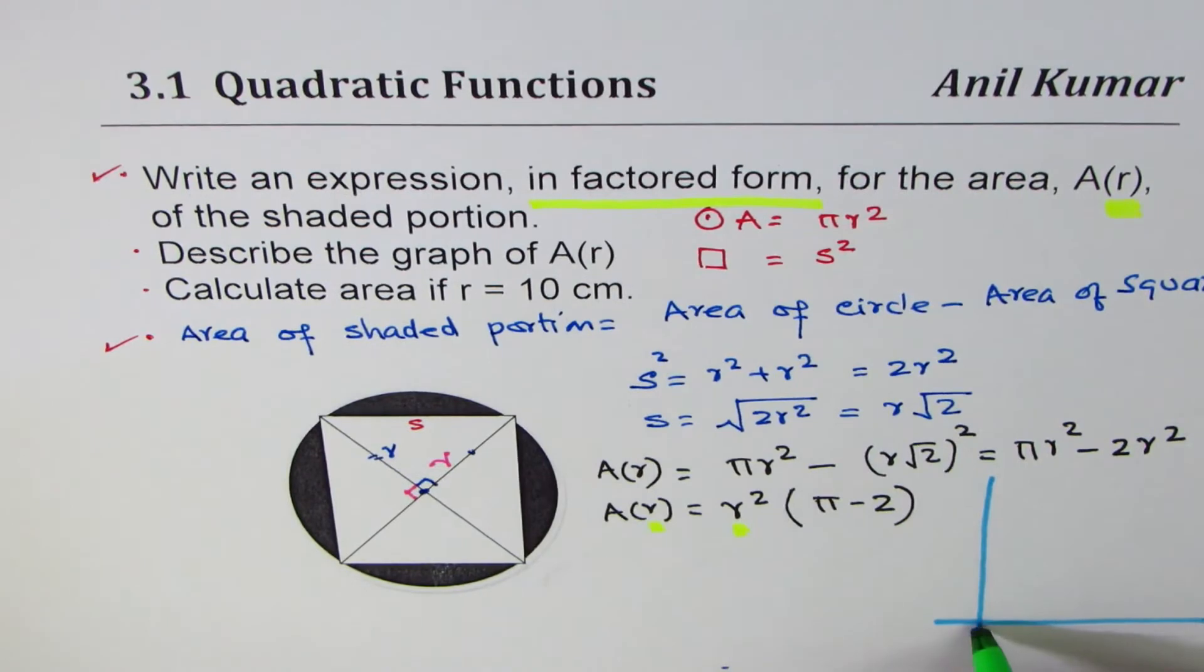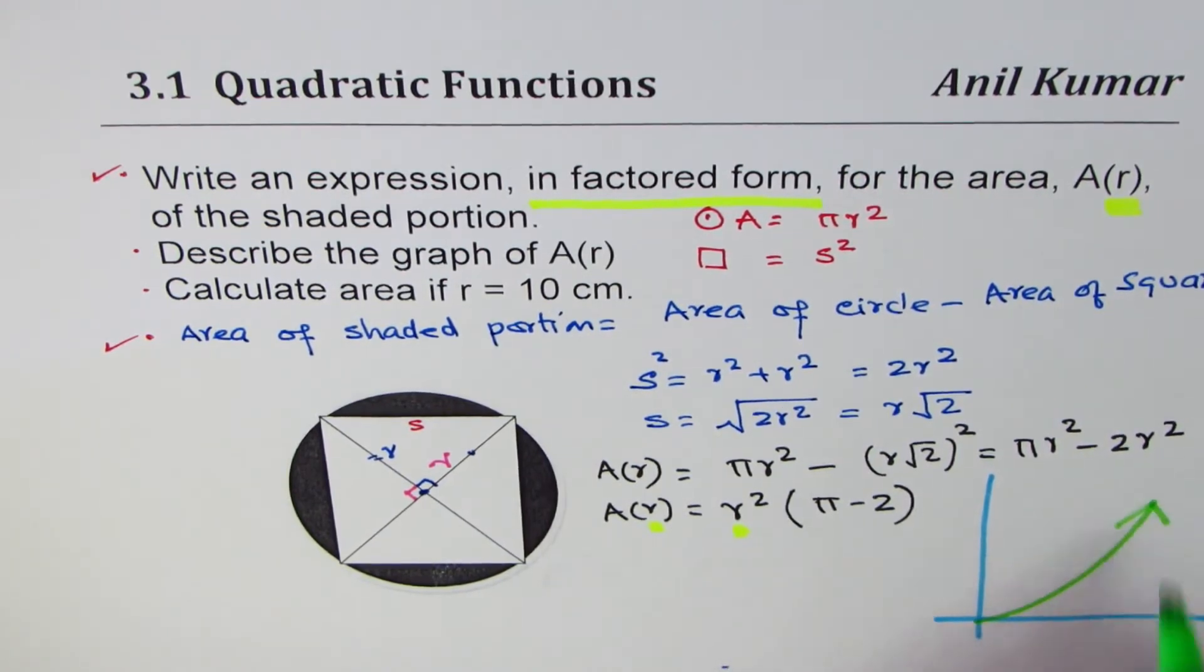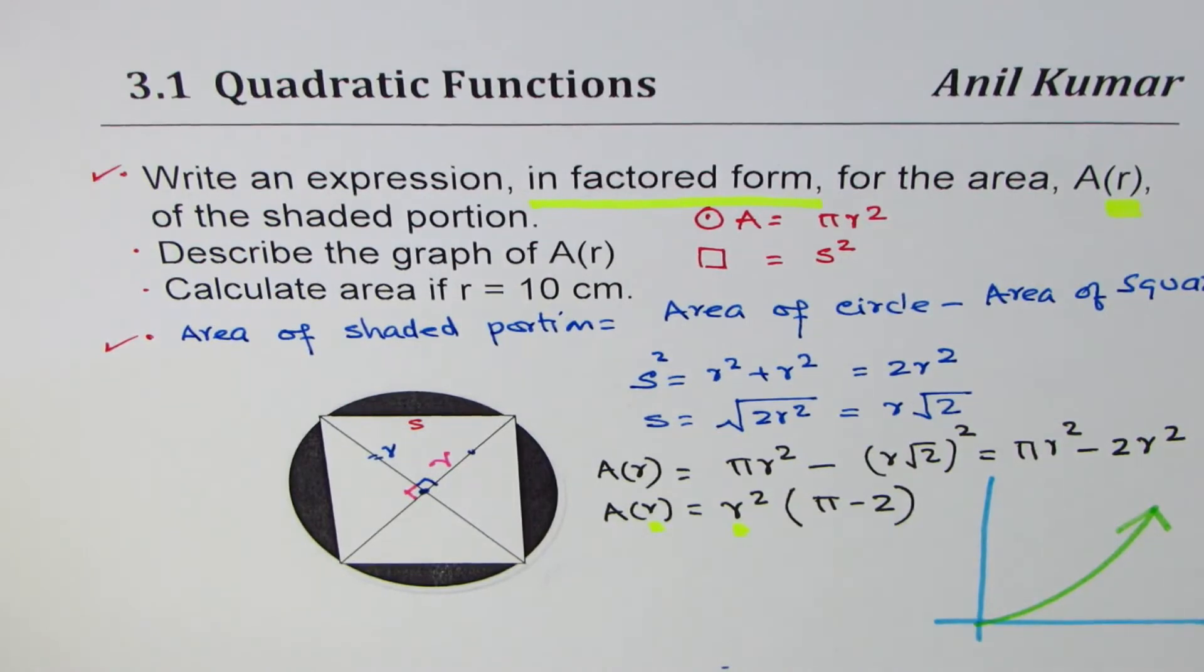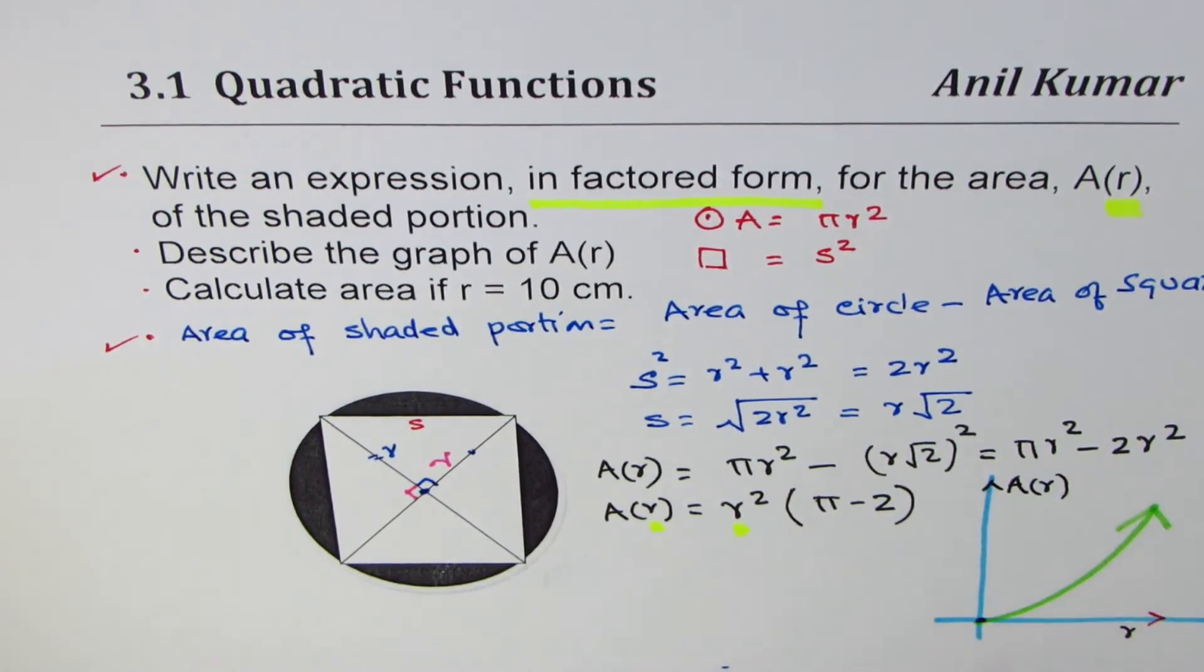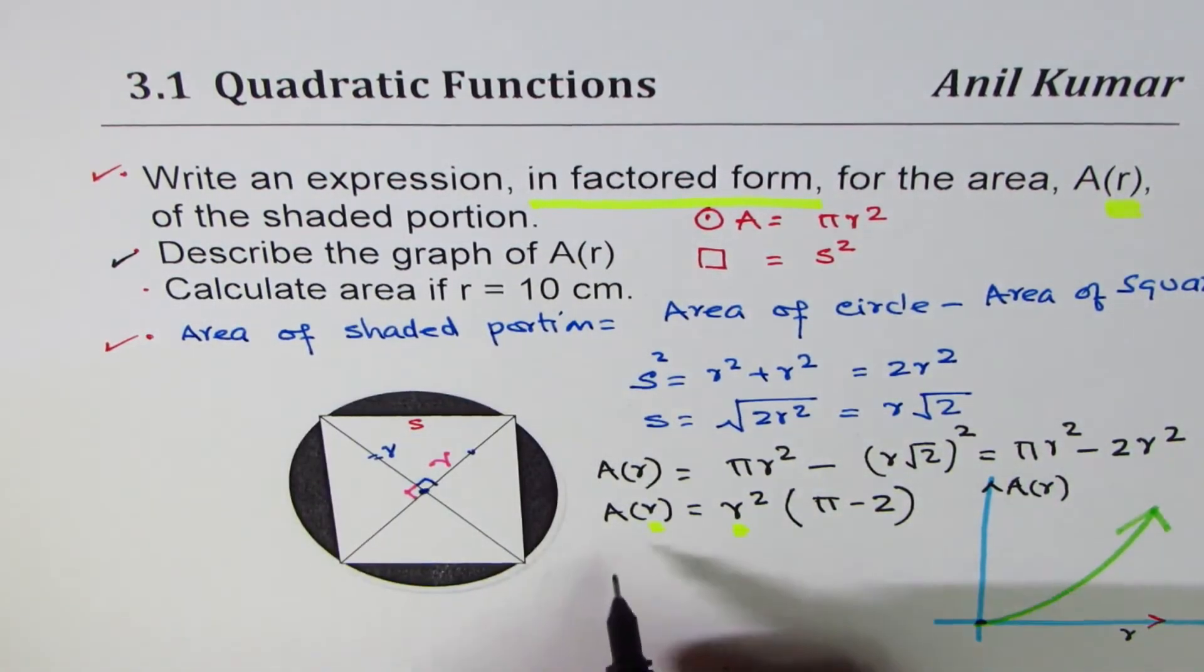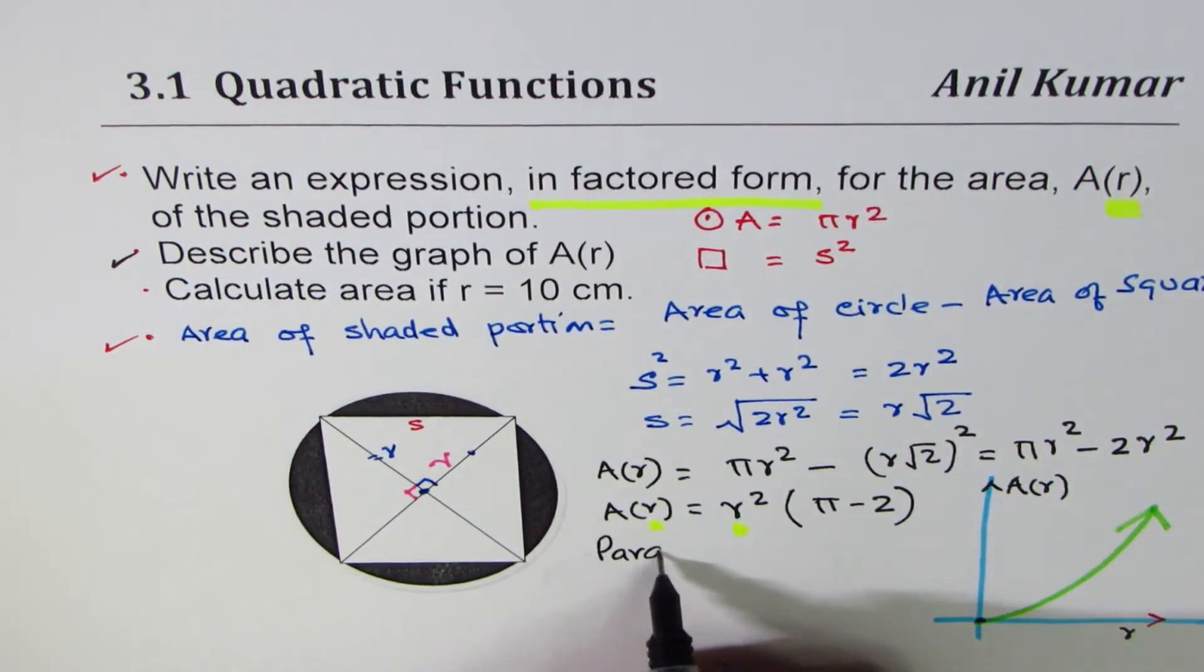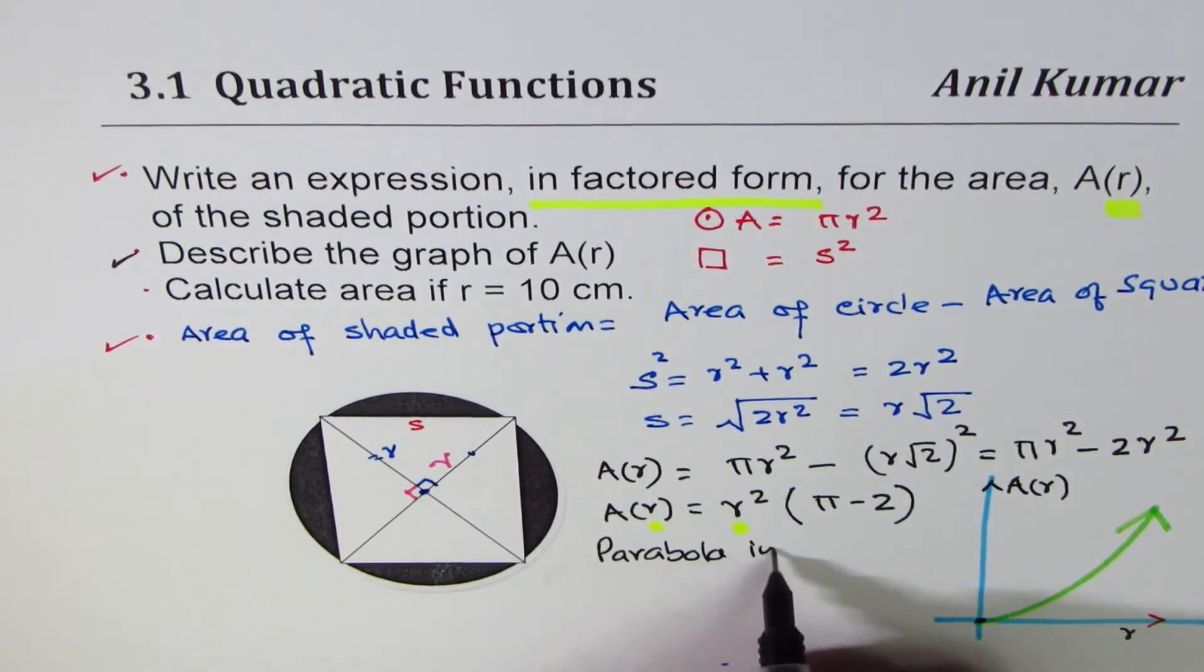If r is 0, area is 0, so the parabola passes through the origin and opens upward. As the value of r increases, it goes up and up. On the x-axis we have radius, which is the independent variable, and on the y-axis we have area as a function of radius. It's a parabola in quadrant one.